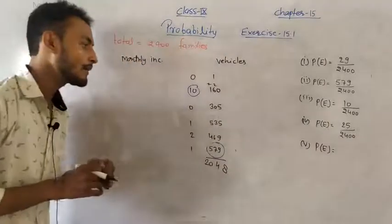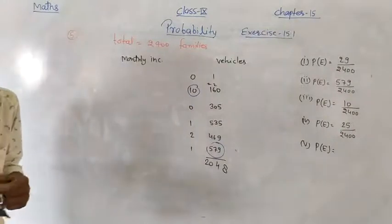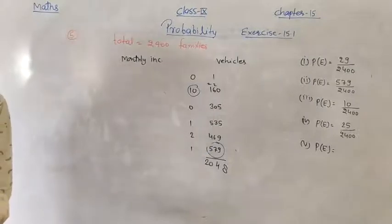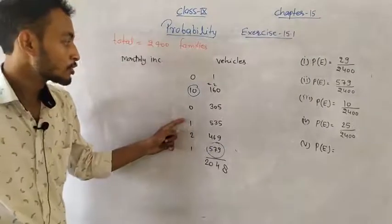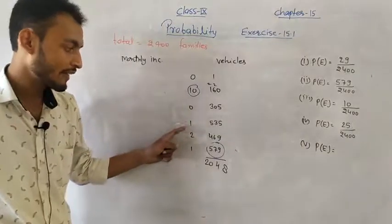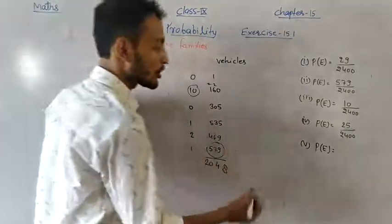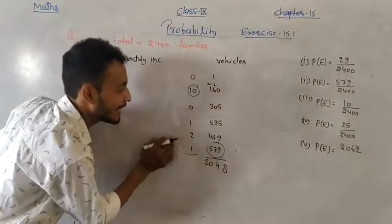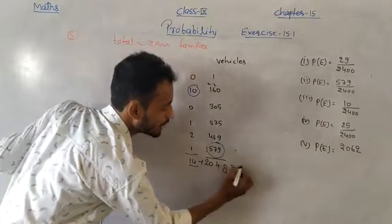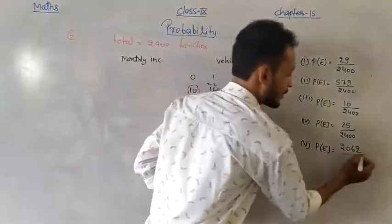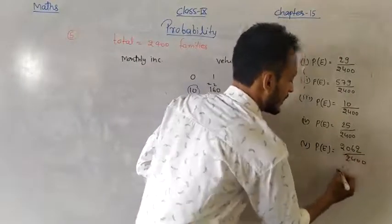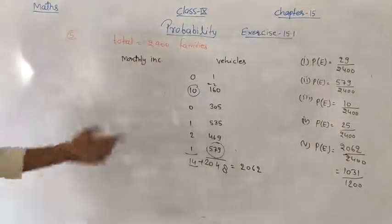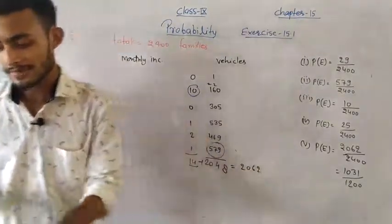After adding all families with 0 or 1 vehicle across all income categories, the total comes to 2062. So probability = 2062/2400, which simplifies to 1031/1200. You can simplify further if possible.